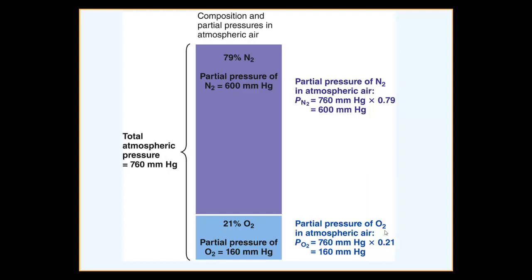It's sort of like if you're carrying a bag of groceries with milk and grapes and whatnot — each item is contributing to the weight you're carrying. The total weight is a collective sum of all the individual weights. If we were to calculate the partial weight of the milk alone, we need to figure out the percentage of milk. If 20% of what you're carrying is milk and you're carrying 20 pounds, then the partial weight of the milk is 4 pounds — 20% of 20 pounds is 4 pounds.